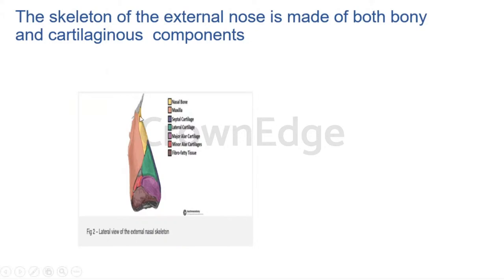The upper portion of the nose is made up of bone — you can see the nasal bone meeting with the frontal bone, and on the sides the maxilla. Below that you can see the septal cartilage and alar cartilage on the sides. The last portion where flaring of the nose occurs has fibro-fatty tissue, which is gained or lost with changes in body weight.